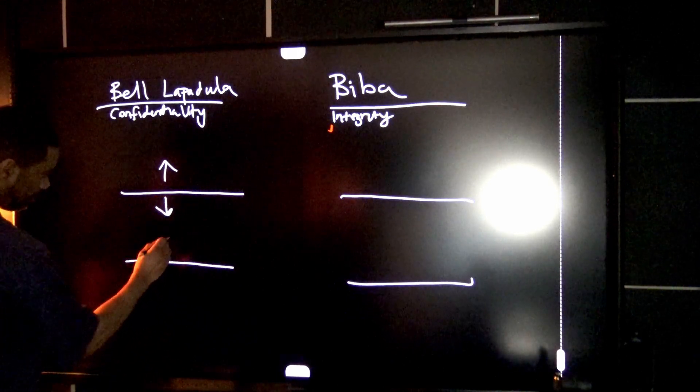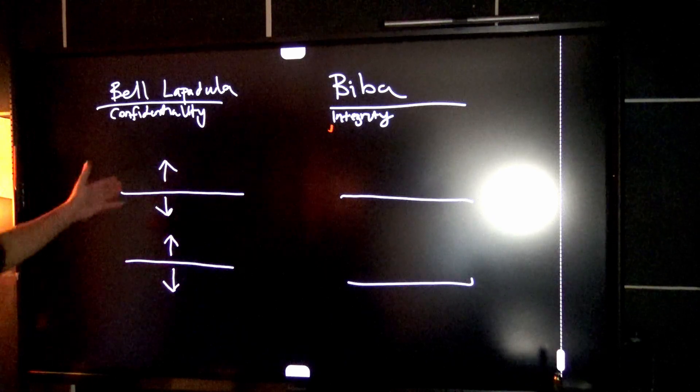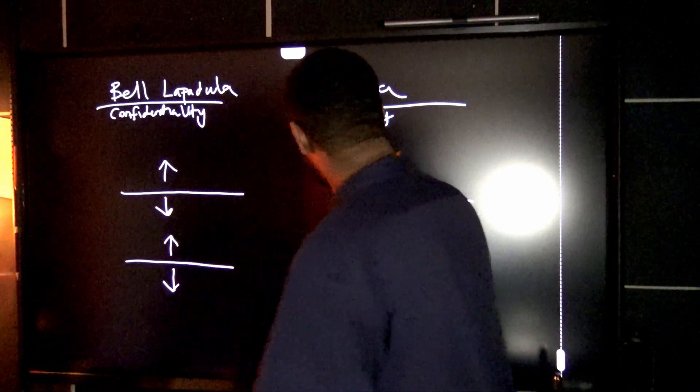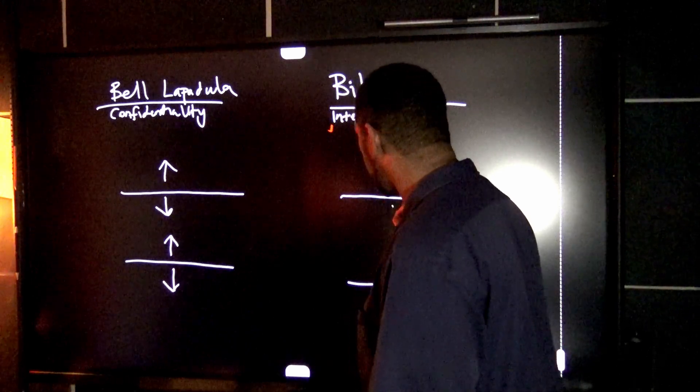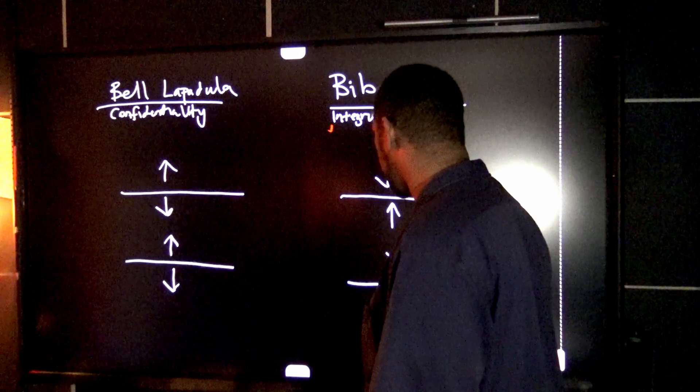We're gonna draw an arrow down here, we're gonna draw an arrow up here and an arrow down here. And we're gonna do the opposite on Biba. So starting off, arrow down, arrow up, and arrow down and arrow up.